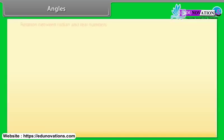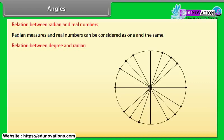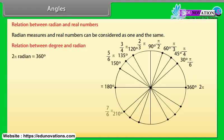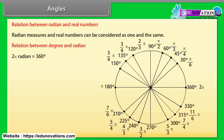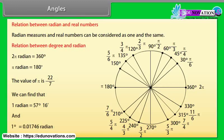Radian measures and real numbers can be considered as one and the same. The relation between degree and radian: 2π radians = 360°, π radians = 180°. The value of π is 22/7. We find that 1 radian = 57° 16', and 1° = 0.01746 radians.